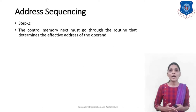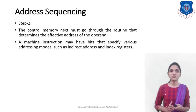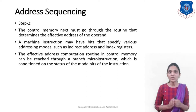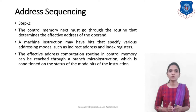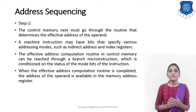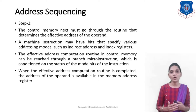In step 2, the control memory must go through the routine that determines the effective address of the operand. The machine instruction may have bits specifying various addressing modes such as indirect addressing, index register, etc. The effective address computation routine can be reached through a branched micro instruction conditioned on the status of the mode bits. When completed, the address of the operand is available in the memory address register.